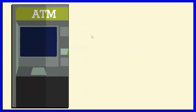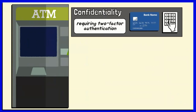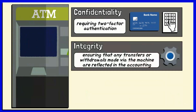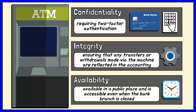To understand how the CIA triad works in practice, consider the example of a bank ATM, which can offer users access to bank balances and other information. An ATM has tools that cover all three principles of the triad. It provides confidentiality by requiring two-factor authentication — both a physical card and a PIN code — before allowing access to data. The ATM and bank software enforce data integrity by ensuring that any transfers or withdrawals made via the machine are reflected in the accounting for the user's bank account. The machine provides availability because it's in a public place and is accessible when the bank branch is closed.